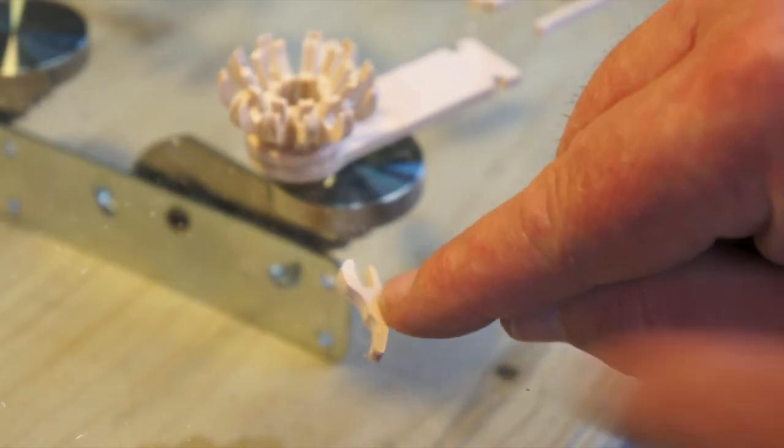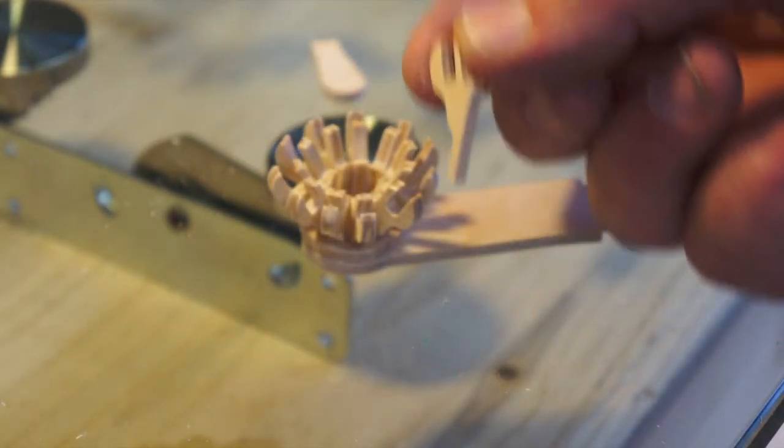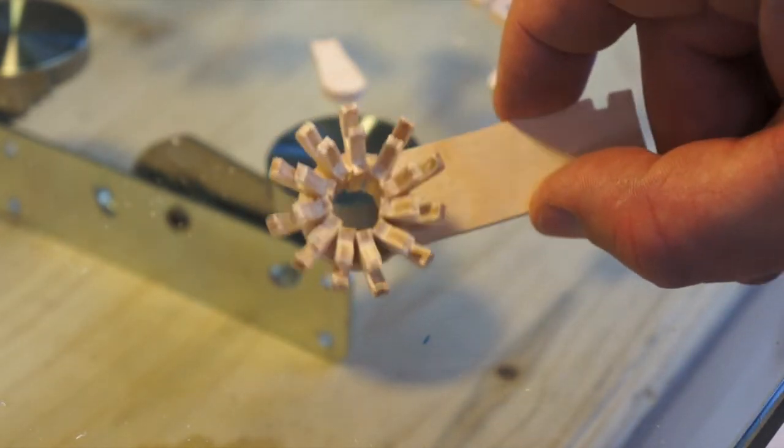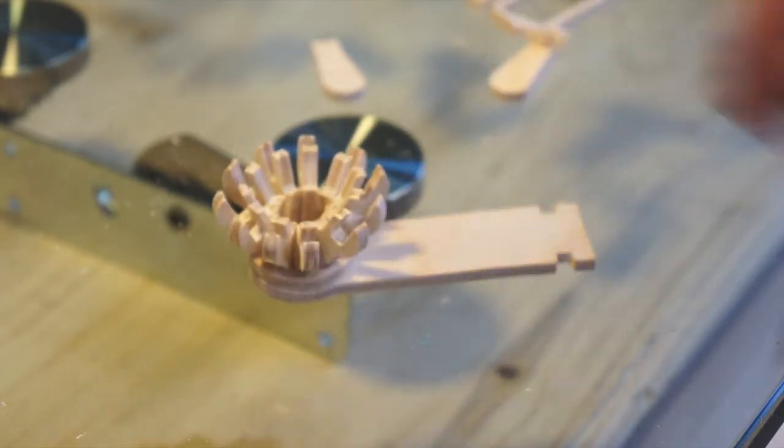Put a dab of hot glue on here, and then held it in place, and I've gone around and that's the 12th petal holder. I've got 11 in there, I'm not sure how you get 12. I'm sure you can.